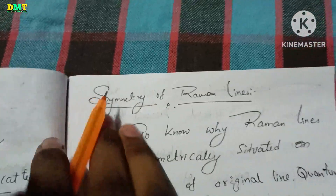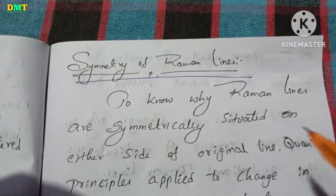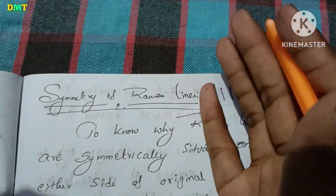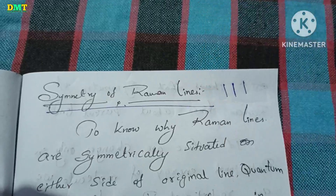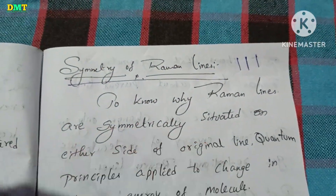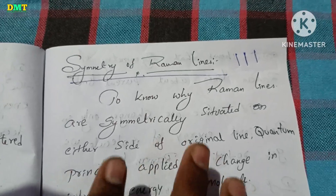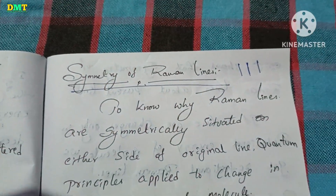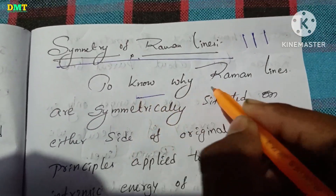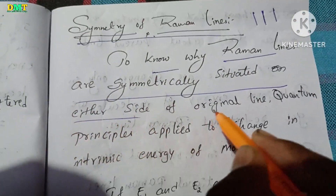The symmetry of Raman lines — in the Raman effect, the main line is at the centre and the Raman lines are symmetrically situated on either side of the original line.